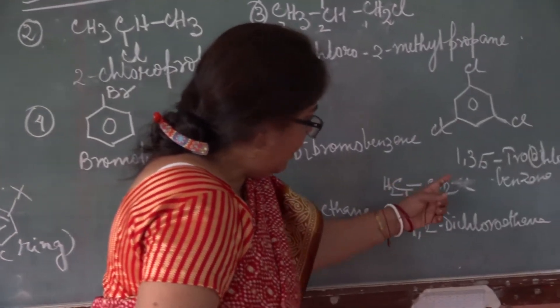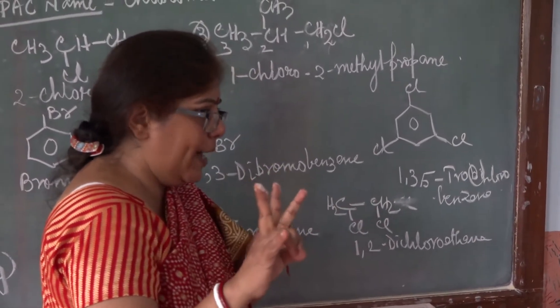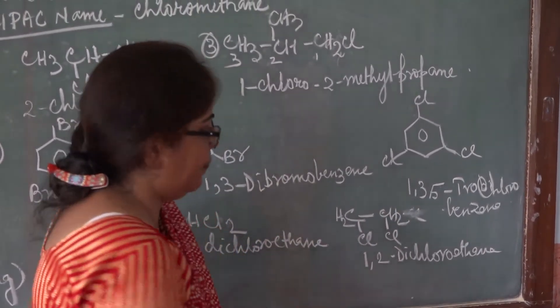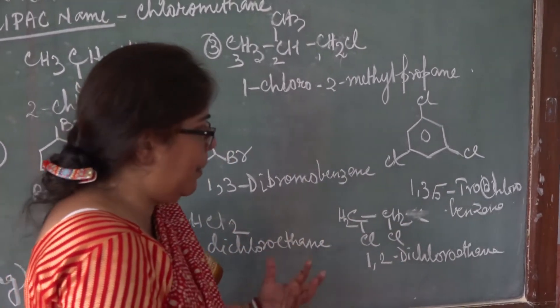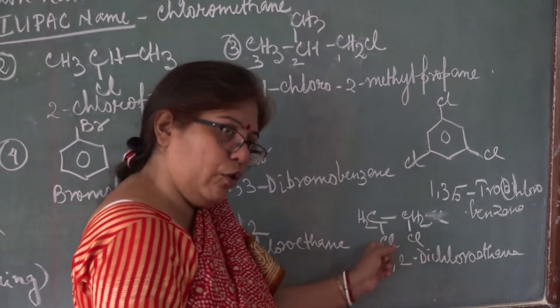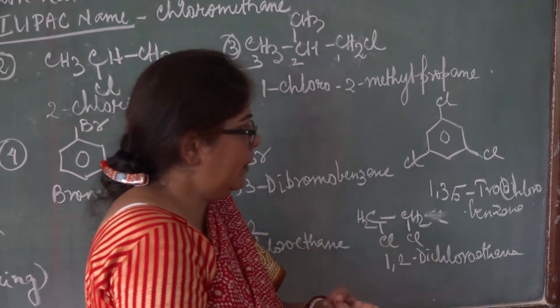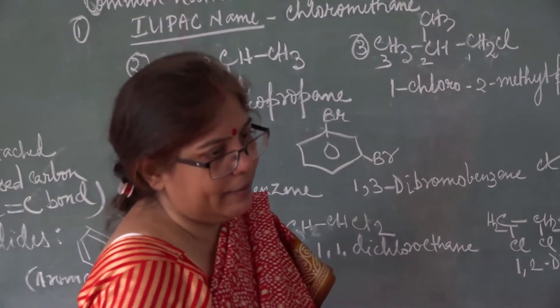This one, see? Again derivative is two carbons. See now, stretch it. Two carbons. Derivative will be of ethane. Position one and two. So what will be the name? One, two. Dichloroethane. One, two, dichloroethane. Understood, students?